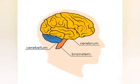Looking at the picture, the largest part of the human brain is called the cerebrum. It is responsible for learning, memory, intelligence, and all sorts of logical thinking. It also controls the functioning of the sense organs — the eyes, ears, nose, tongue, and skin.